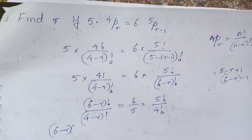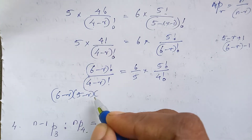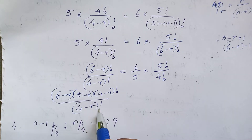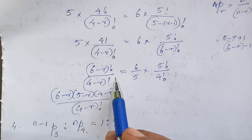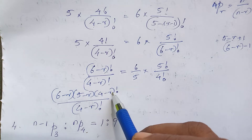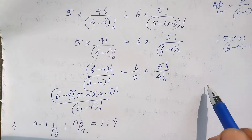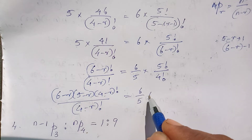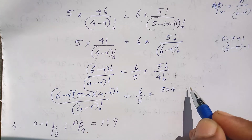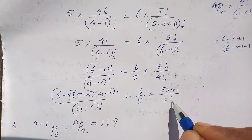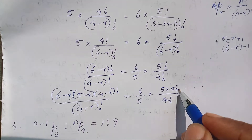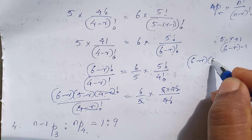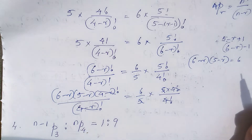This simplifies to (5 minus r) into 3 into 4 factorial by 4 factorial. If you expand 6 minus r factorial, it becomes 6 minus r, 5, 4, 3, 2, 1, and then 4 factorial. So we get 6 minus r into 5 minus r equal to 6, which we now need to multiply out.